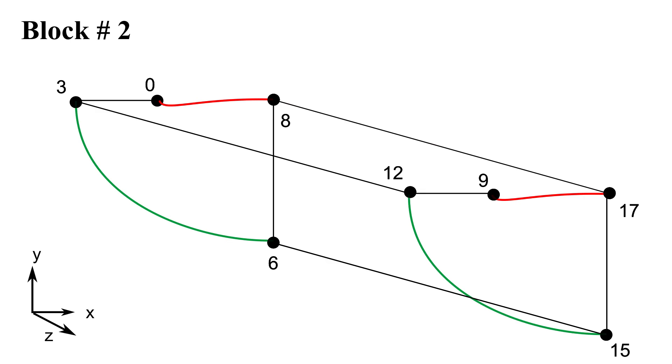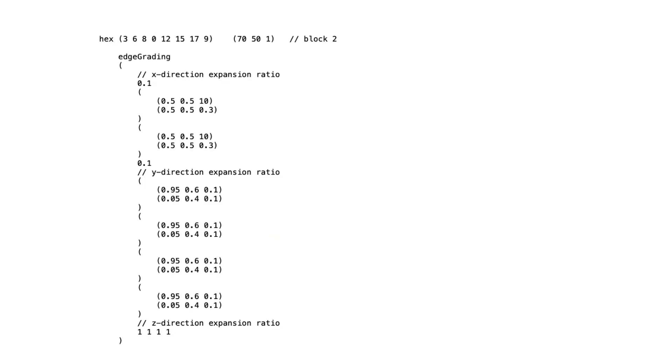Block number 2 is similar to block 0, so we will apply the same edge grading strategy. This ensures consistent cell distribution and smooth mesh connectivity across the upper region of the airfoil. And here is how to implement it directly inside the BlockMeshDict file using the same edge definition and the grading values we applied before.